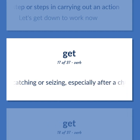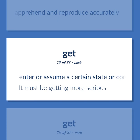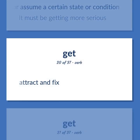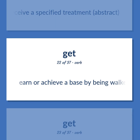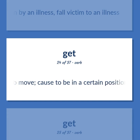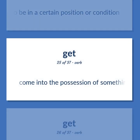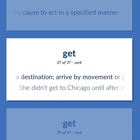Get: Succeed in catching or seizing, especially after a chase. Apprehend and reproduce accurately. Enter or assume a certain state or condition — it must be getting more serious. Attract and fix. Receive a specified treatment, abstract. Earn or achieve a base by being walked by the pitcher. Be stricken by an illness, fall victim to an illness. Cause to move, cause to be in a certain position or condition. Come into the possession of something concrete or abstract. Cause to do, cause to act in a specified manner. Reach a destination, arrive by movement or progress — she didn't get to Chicago until after midnight.